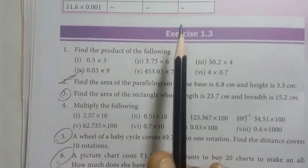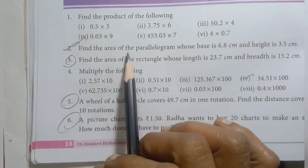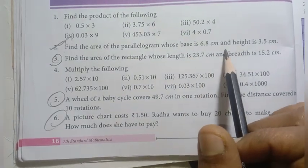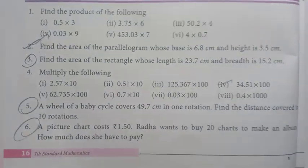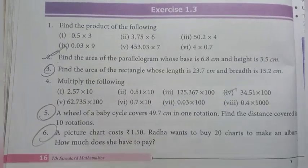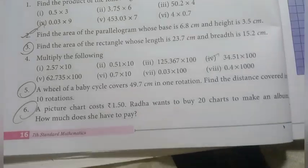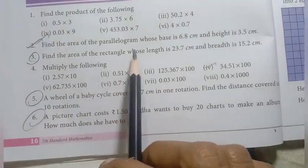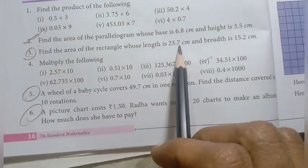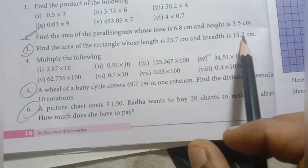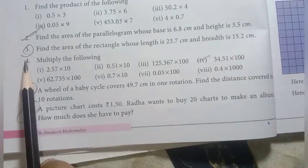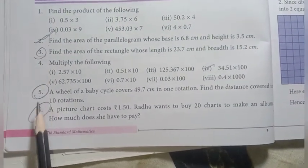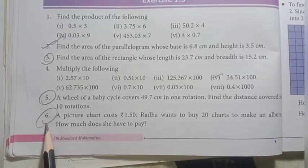Exercise 1.3, second one: find the area of the parallelogram whose base is 0.8 cm and height is 3.5 cm — this is a previous year 3rd midterm test question. Next: find the area of the rectangle whose length is 23.7 cm and breadth is 15.2 cm — that's an important question. Fifth and sixth ones are also important questions.